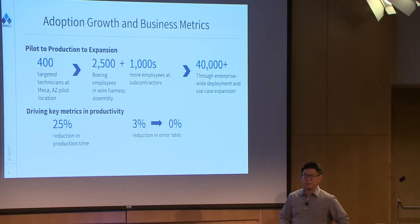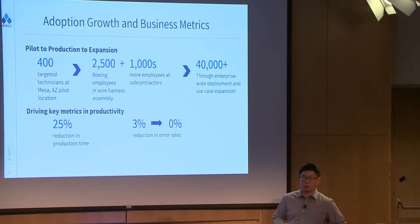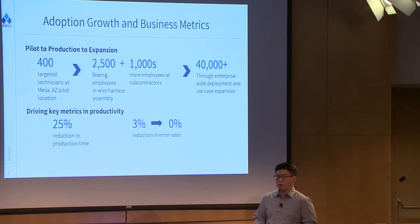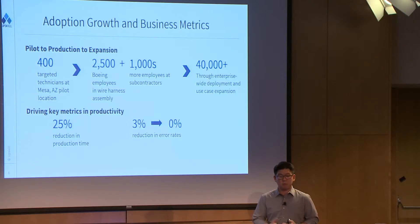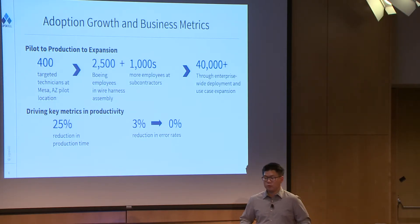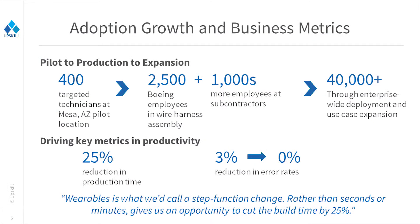You can't do that without close business metrics tied to it. Some of the earliest data made public a number of months ago shows a 25% reduction in production time and driving the error rate from 3% to effectively zero. So not only are you doing things faster at the micro task level and building wire harnesses faster, but at the macro level, by reducing rework to effectively zero, you've cut back the total time to build an aircraft by a huge margin. This is why one of our sponsors called wearables a step function change in human productivity — not an incremental improvement that moves the needle just a little bit.